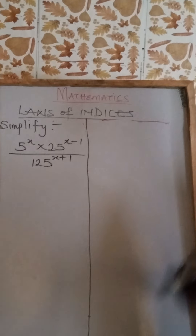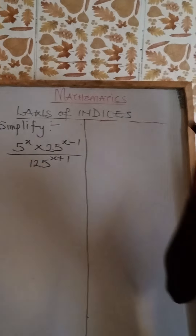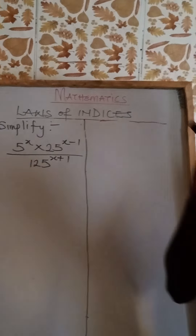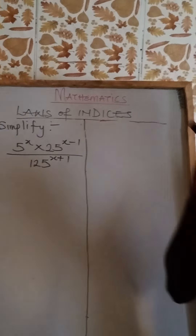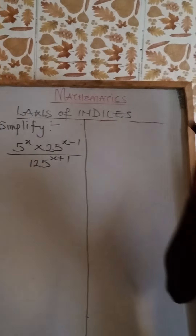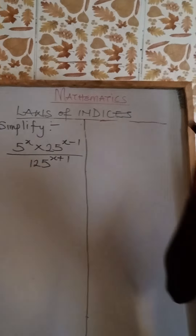Let's look at the question on the board. If we look at this question, you will notice that to solve it, we are going to consider more than one law of indices. There is a multiplication sign here, so we are going to consider the addition law, and at the same time, we have a division line here, so we are also going to consider the subtraction law.